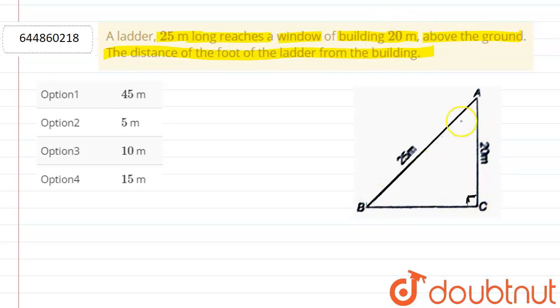building, and here AB is the ladder which reaches the window. The building height is 20 meters, and the ladder is 25 meters. So here we have to find the distance